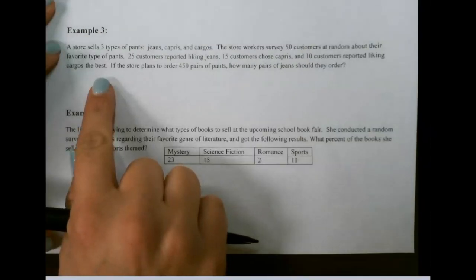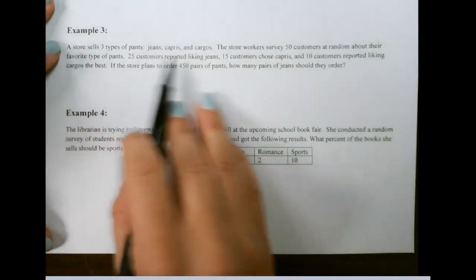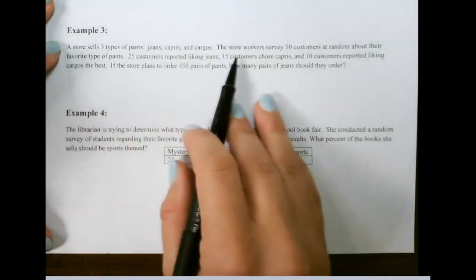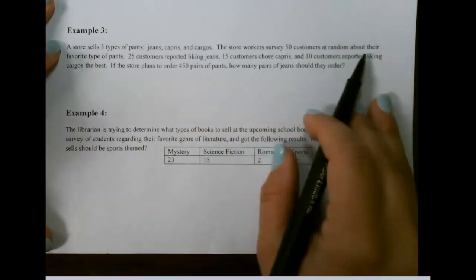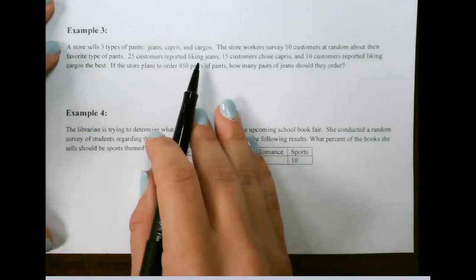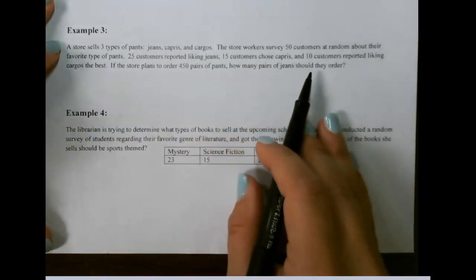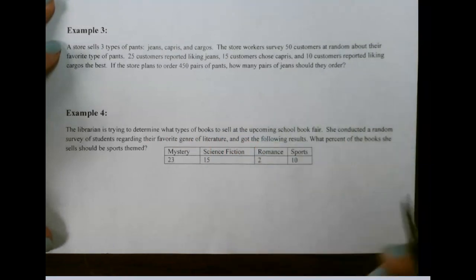Let's look at this next example where we're not looking at percents. A store sells jeans, capris, and cargos. The store workers survey 50 customers at random about their favorite type of pants. 25 customers reported liking jeans, 15 customers chose capris, and 10 customers reported liking cargos. If the store plans to order 450 pairs of pants, how many pairs of jeans should they order?